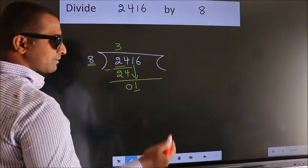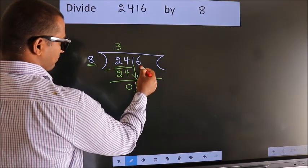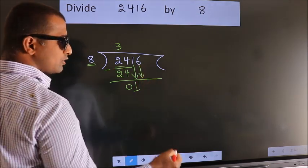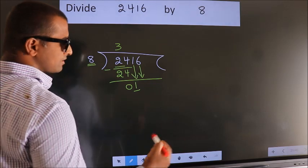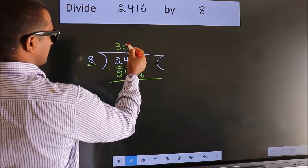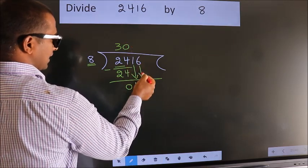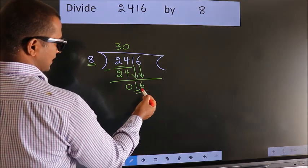So we should bring down the second number. The rule to bring down the second number is to put 0 here. Then only we can bring down this number. So, 16.